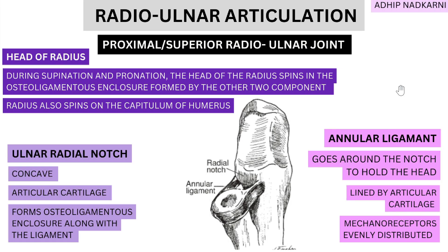Today we are going to talk about both the proximal and the distal radio-ulnar joints and see what articulation occurs at these joints. Looking at the proximal — or superior — radio-ulnar joint, the articulation occurs between the radius and the ulna, along with the annular ligament which goes around it. The radius is accepted by the ulna via the ulnar radial notch.